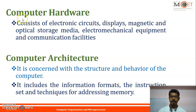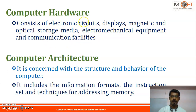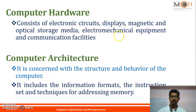Computer hardware consists of electronic circuits, displays, magnetic and optical storage media, electromechanical equipment, and communication devices — the physical parts of the computer. Computer architecture is concerned with the structure and behavior of the computer; it includes the information formats, the instruction set, and techniques for addressing memory.